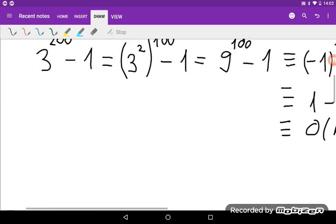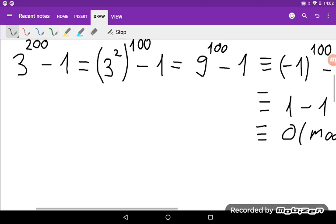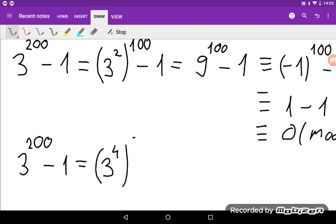So that's the first solution and the second one will be number 3 to the power of 200 minus 1 is equal to... So now I can write this as 3 to the power of 4 to the power of 50 minus 1.